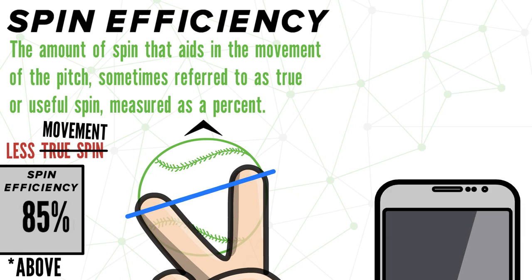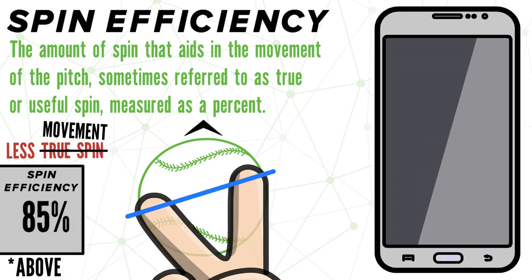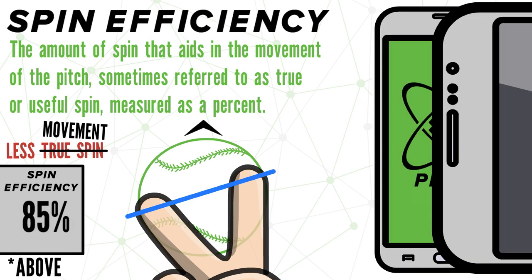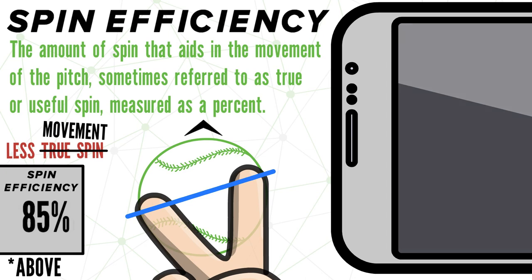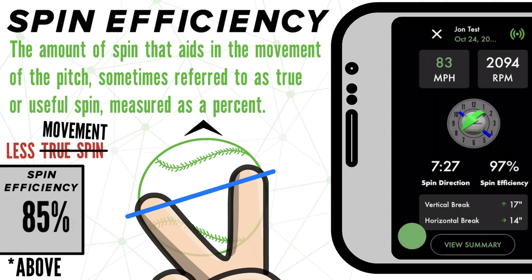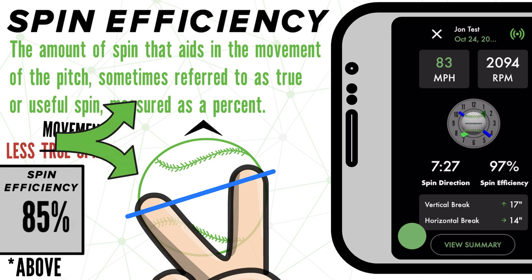To better understand this, let's take a look at what this looks like in the Diamond Kinetics Pitch Tracker app. Spin efficiency can be interpreted both by looking at the percentage and the animation of each pitch found right in the middle of the screen.